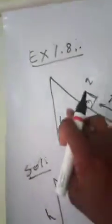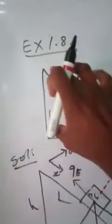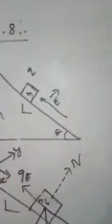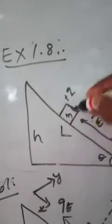The next example is sum 1.8, which is about Electrified Continuous Charge Distribution. This is a frictionless sliding board problem. M is the mass of the body, and Q is a positive charge.